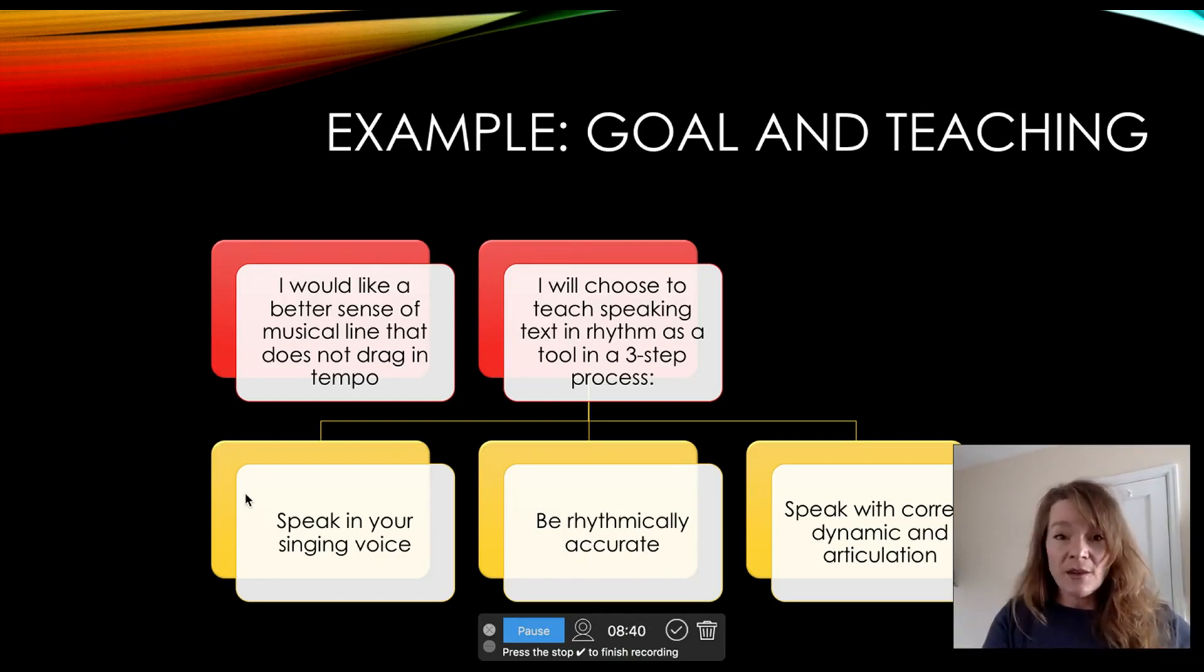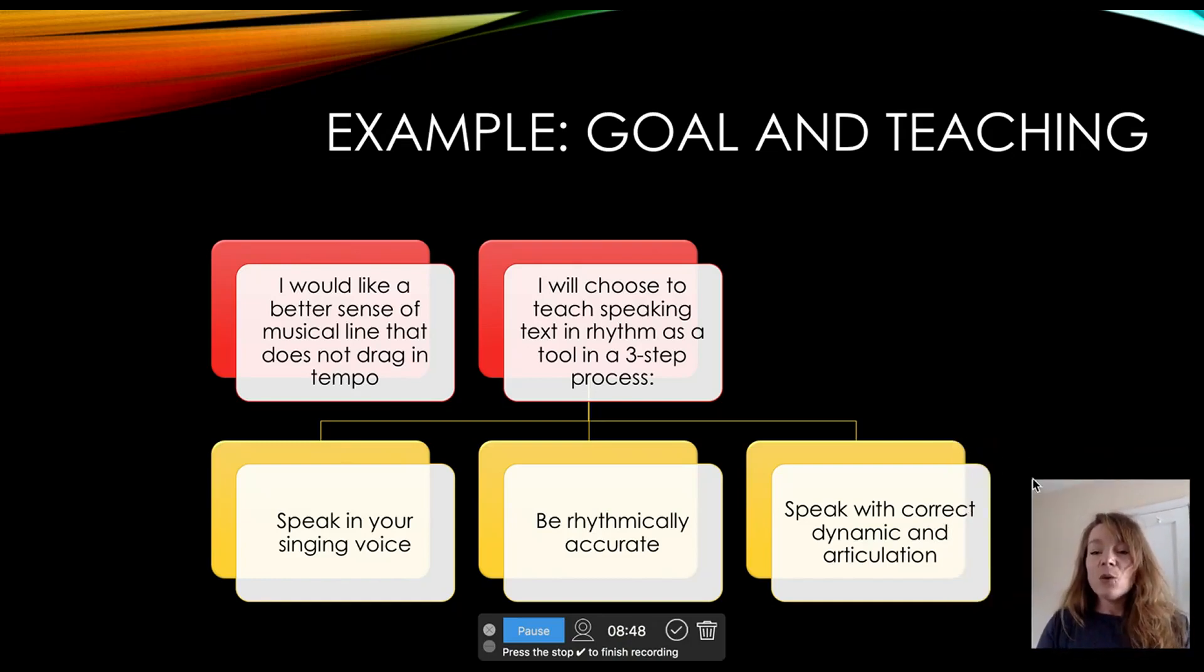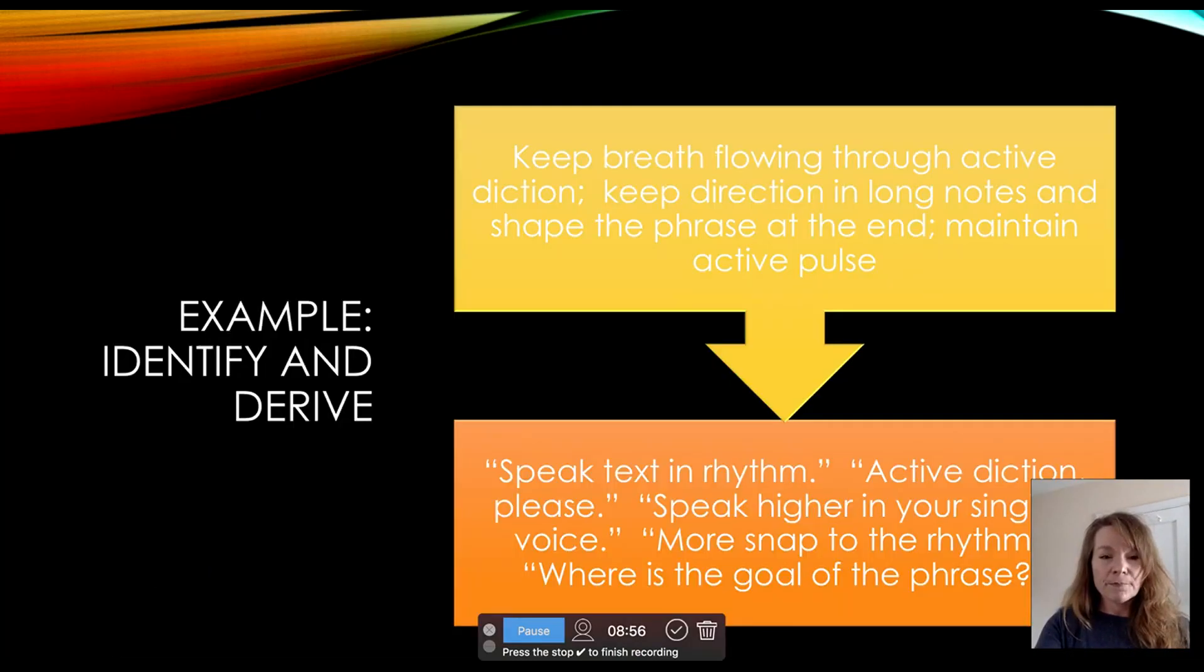First, speak in your singing voice. Second, be rhythmically accurate in your speaking. And finally, speak with correct dynamic and articulation. Those are the three goals. We speak in rhythm and these are the key concepts we would identify together. Keep the breath flowing through the active diction, popcorn diction. Keep the direction in the long notes and shape the phrase dynamically at the end and maintain the active sense of pulse.